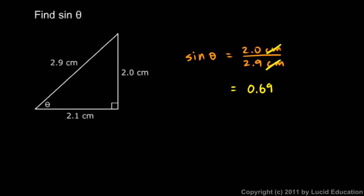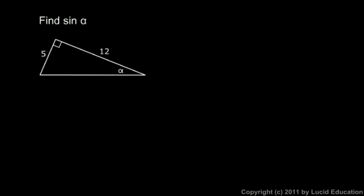As long as those units are the same, they will always cancel out. So we just get 2.0 divided by 2.9, which is equal to 0.69, or at least that's what it is rounded to two decimal places. Here's another example: we're told to find the sine of angle alpha.